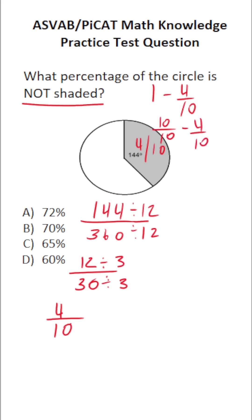Minus 4 over 10. When you subtract fractions, you keep your denominator the same, but you subtract your numerators. 10 minus 4 is going to be 6 over 10.